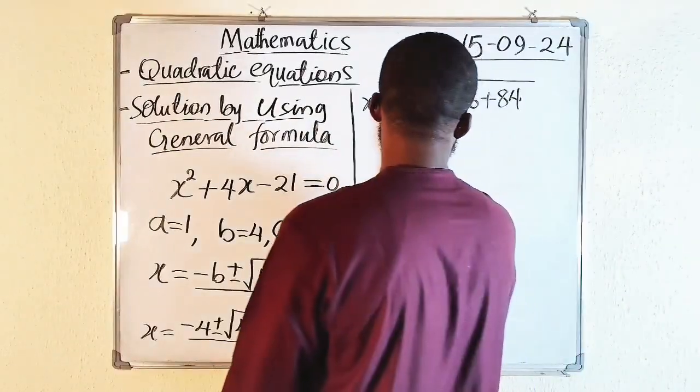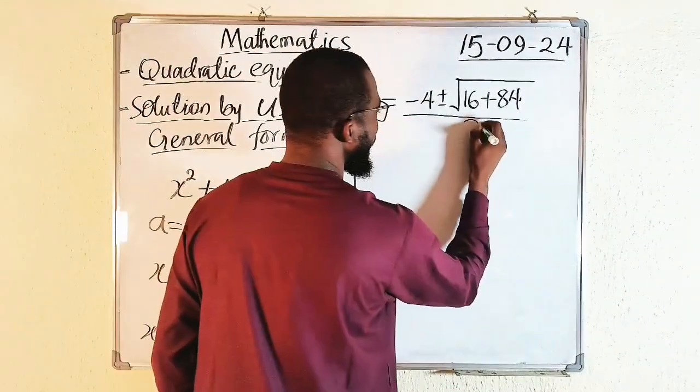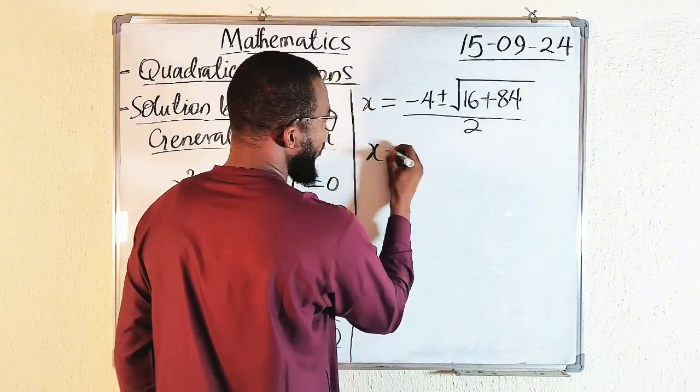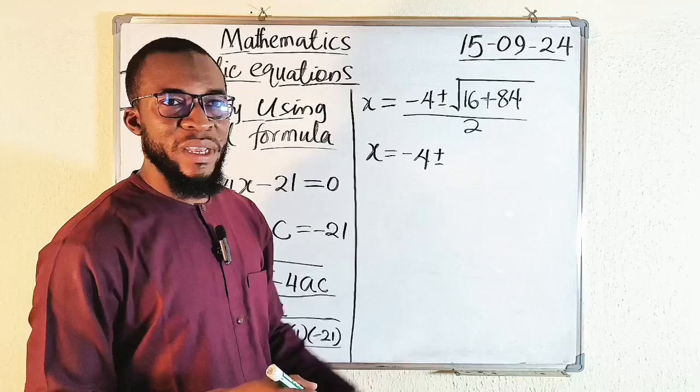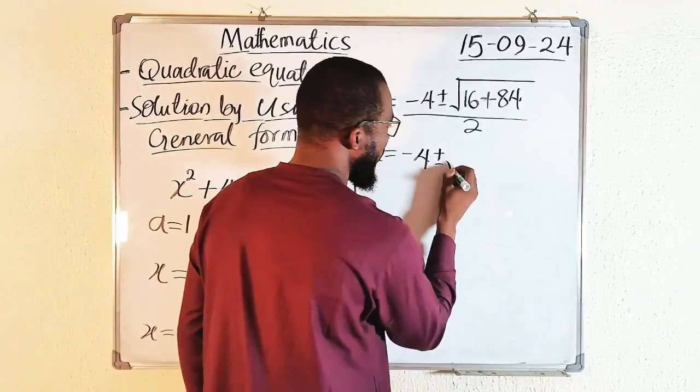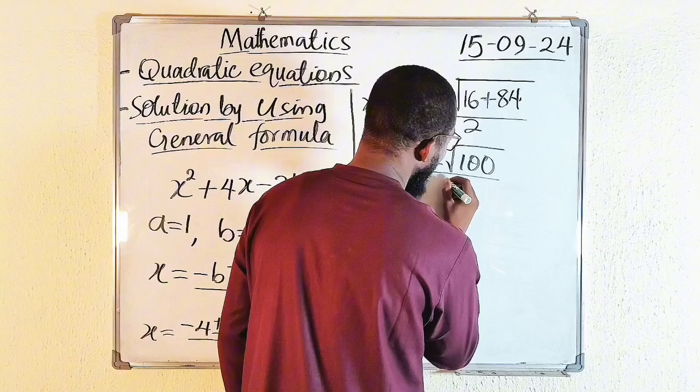The whole of this divided by 2 multiplied by 1 is 2. x is now equal to minus 4 plus or minus. 16 plus 84 will give us 100. Take note of these steps. Divide by 2.